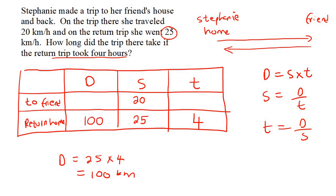Now, the thing to remember with these questions is that the distance there is always going to be the same as the distance back. And so we can say that the distance to the friend is also 100. Now, we can use the time formula, which says time is equal to distance over speed, which would then give us 100 divided by 20, which is 5 hours. And so let's make sure we've answered the question. How long did the trip there take if the return trip took four hours? Well, there we have it, five.